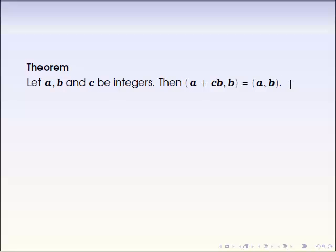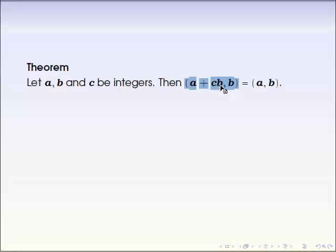The method to prove this theorem is like this: let's find all the possible common divisors between b and a plus c times b, and between a and b. We just choose all the possible common divisors between these numbers and show they are exactly the same. Therefore, the greatest common divisor for both must be exactly the same. That's what we want to prove here.